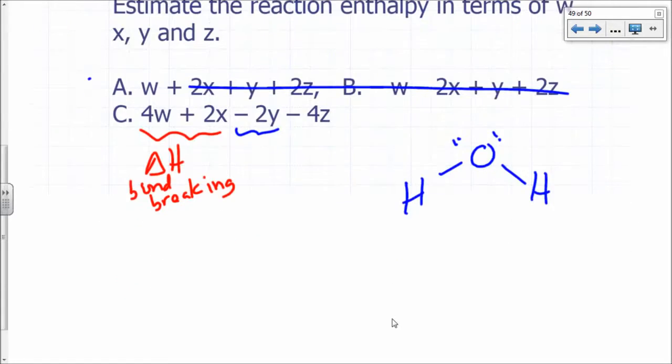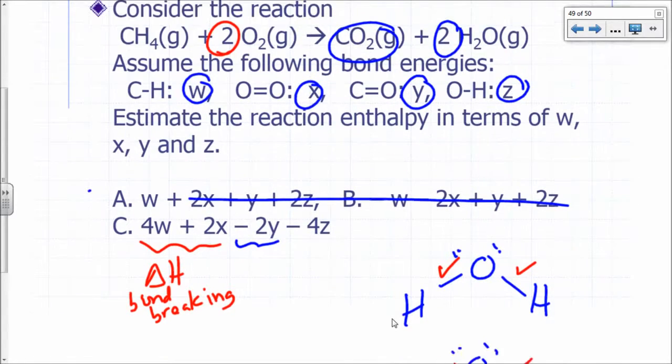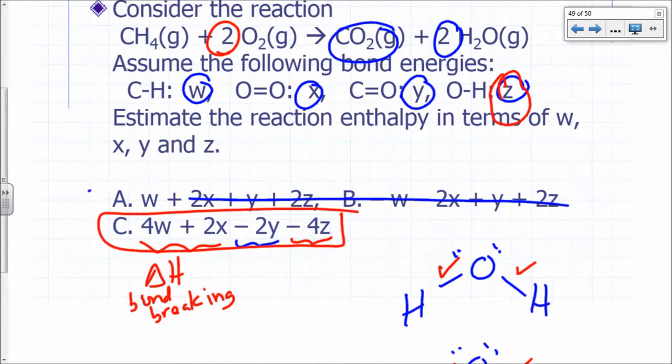So you have H, O, H. So you have one, two, three, four O-H bonds, so 4Z. Okay, so O-H bond energy is Z, so minus 4Z. So that would be your estimated delta H for that reaction.